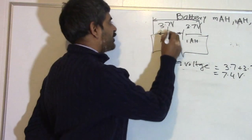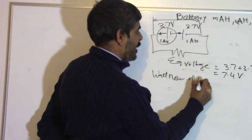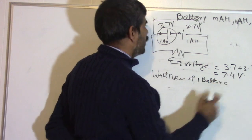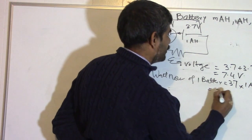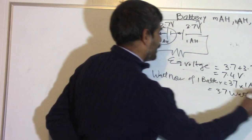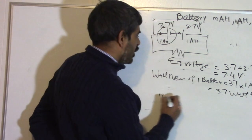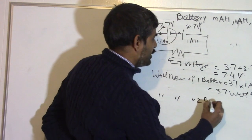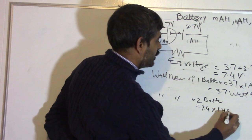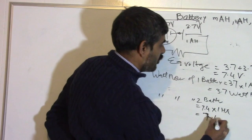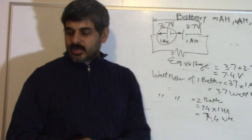If one battery has a watt hour, the watt hour of one cell will be equal to 3.7 volts multiplied by 1 ampere hour, that will be 3.7 watt hour. But if you combine these two in series, their voltage becomes 7.4 volts. So the watt hour of two batteries in series will become 7.4 multiplied by 1 ampere hour, that will be equal to 7.4 watt hour. So combining the batteries in series increases their watt hour rating.